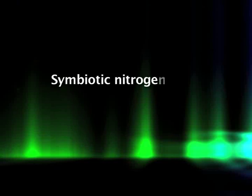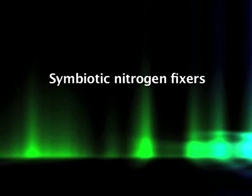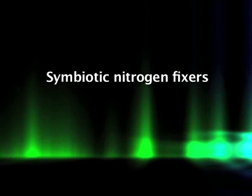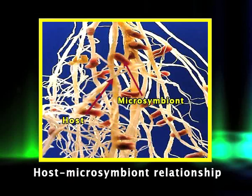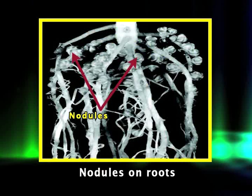The uptake and assimilation of nitrogen occurs through phases like nitrate uptake and ammonia uptake. Let's now discuss nitrogen fixation. There are specific organisms called symbiotic nitrogen fixers that associate with plants. In this association, the plant is identified as the host and the microbial partner is known as the microsymbiont. The most common form of symbiotic association results in the formation of enlarged, multicellular structures called nodules on the roots or occasionally on the stem of the host plant.